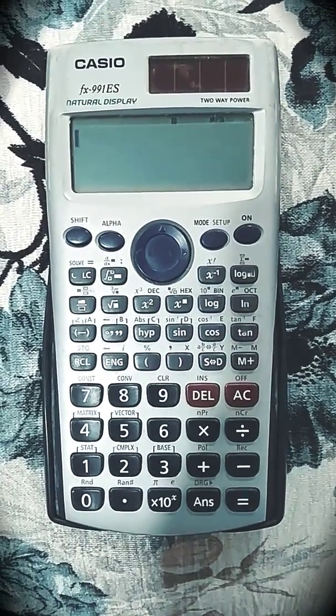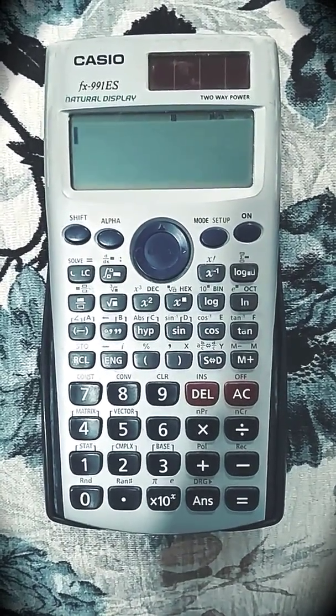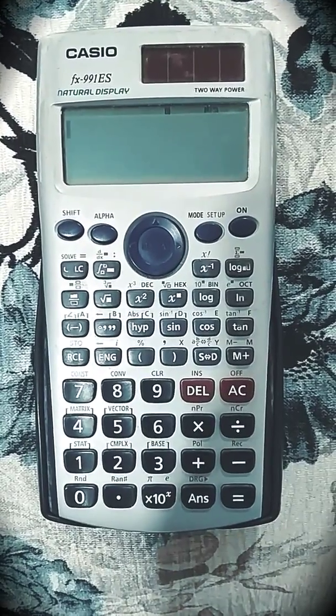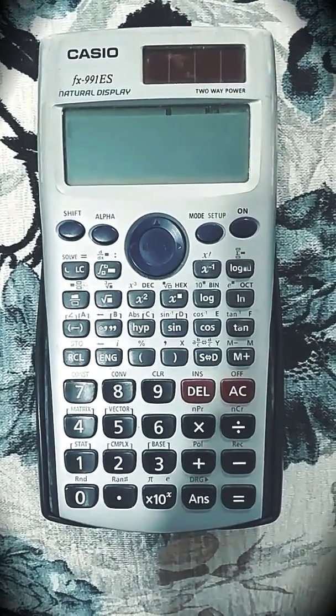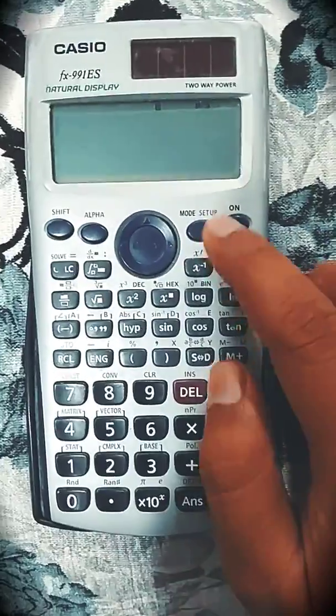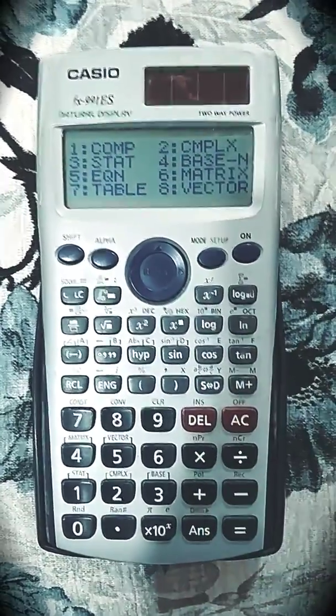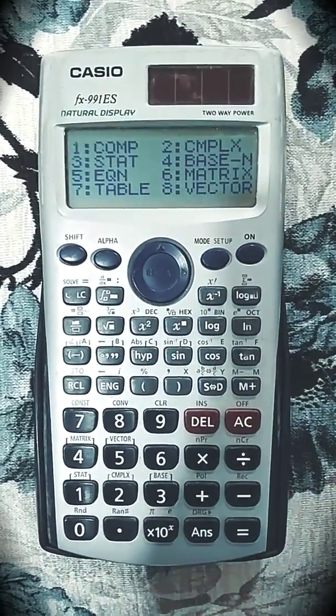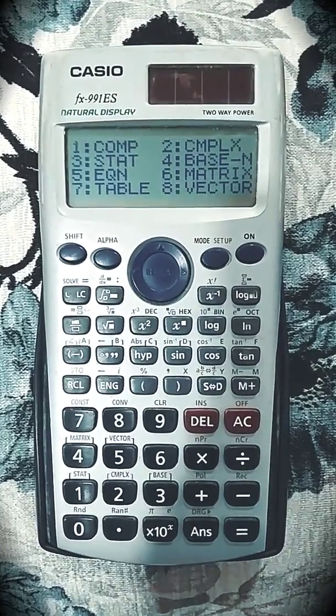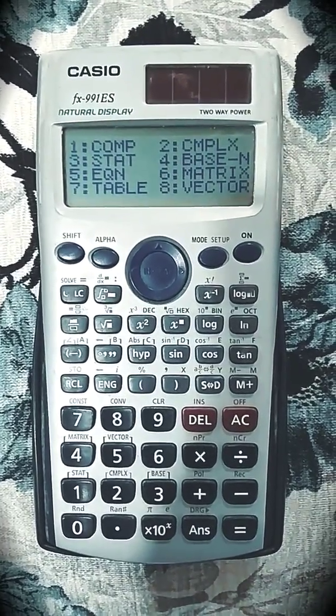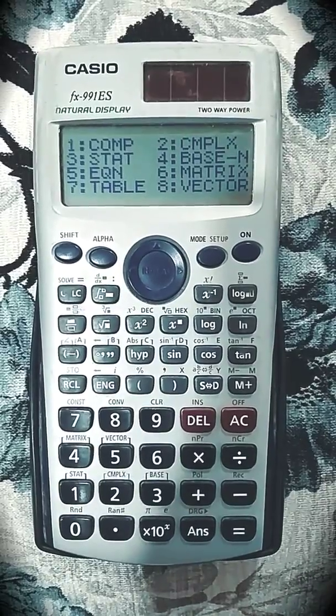Welcome. Today we will learn how to use the 991ES scientific calculator. We will see different modes available in this calculator. First of all, press the mode button. You will observe the different modes: competition mode, complex, statistics, base mode, equation mode, matrix, table, and vector.